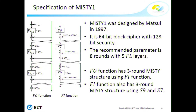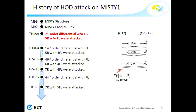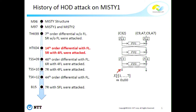Many researchers have applied more modern cryptanalysis to Misty-1, for example impossible differential, higher-order differential, and integral cryptanalysis. Especially higher-order and integral cryptanalysis is very powerful for Misty-1 because the algebraic degree of S9 and S7 is very small. This is the history of high-order differential attacks on Misty-1. In 1999, a seventh-order differential without FL layers was first proposed, and using this characteristic, five rounds without FL layers were attacked. In 2004, a new integral characteristic — a high-order differential characteristic with FL layer — was proposed, and five rounds with four FL layers were attacked.